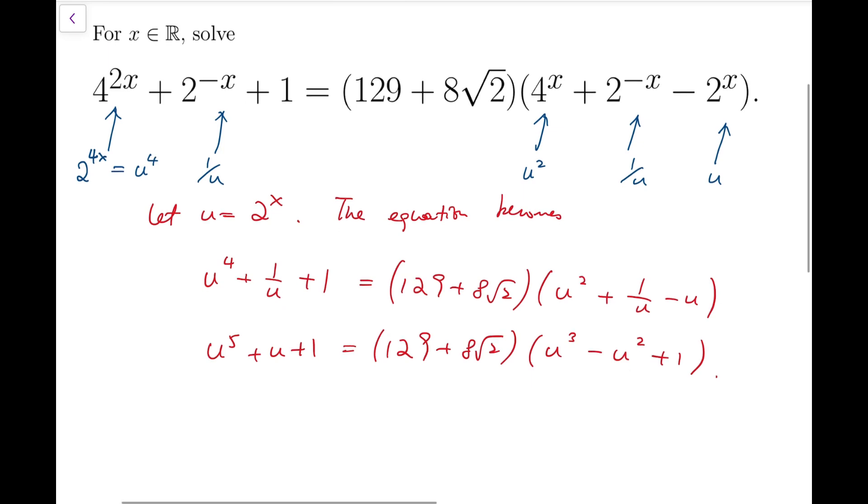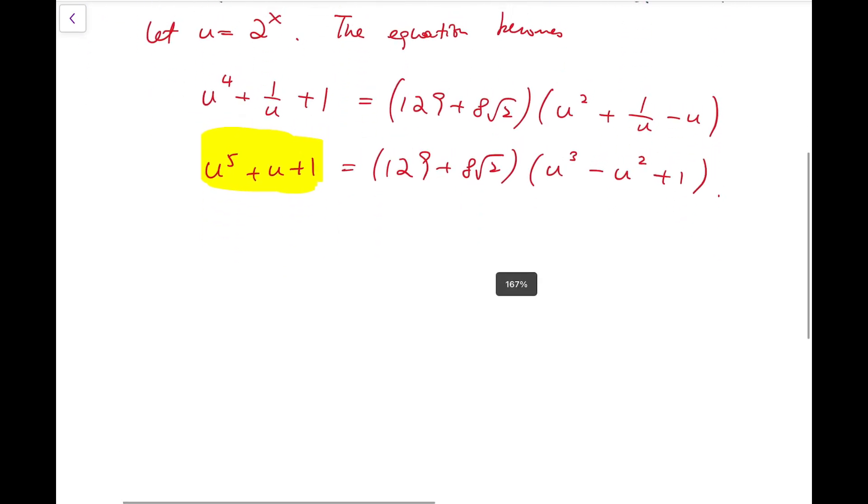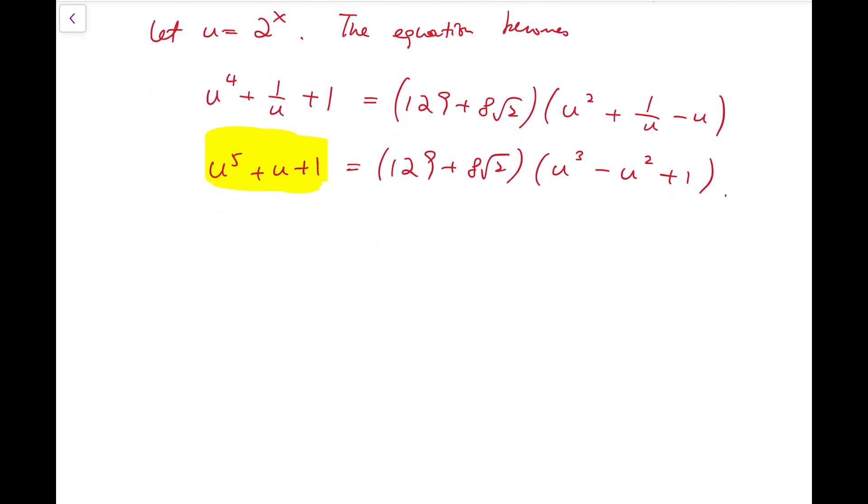Now the magic trick is that this polynomial is actually factorizable. In fact, I can rewrite the polynomial at the left-hand side to be u to the 5 minus u squared plus u squared plus u plus 1. I'm going to explain how I got this separately at the end of the video.